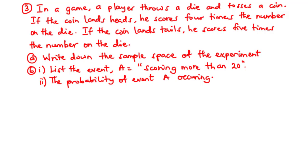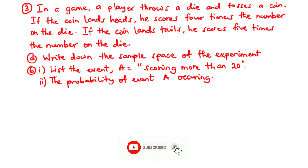This happens to be the third question. In a game, a player throws a die and tosses a coin. If the coin lands heads, he scores four times the number on the die. If the coin lands tails, he scores five times the number on the die.